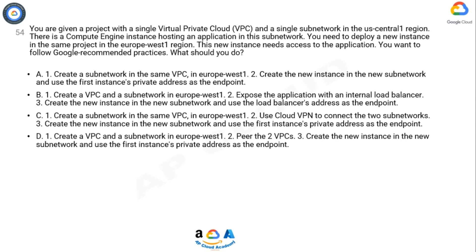Option D: 1) Create a VPC and a subnetwork in europe-west1. 2) Peer the two VPCs. 3) Create the new instance in the new subnetwork and use the first instance's private address as the endpoint.